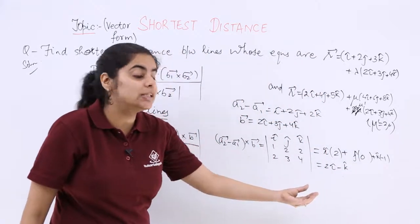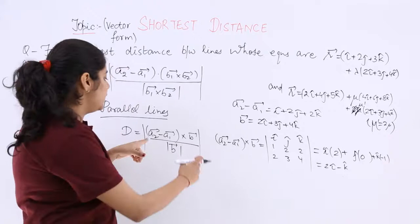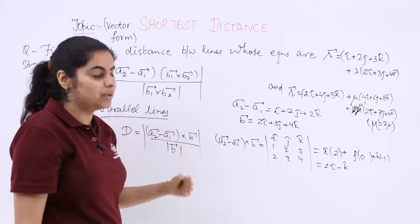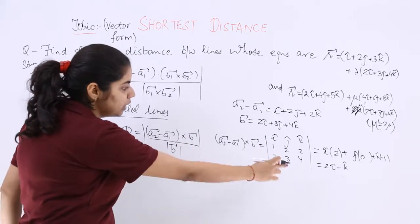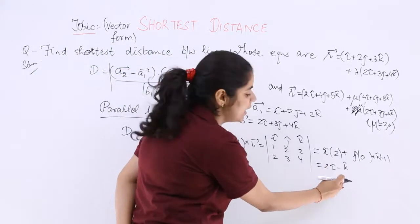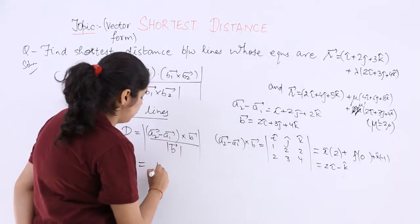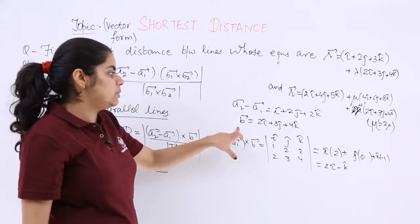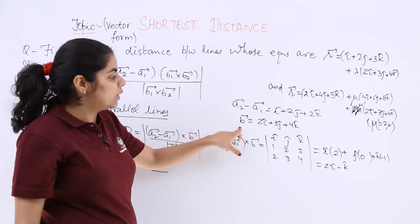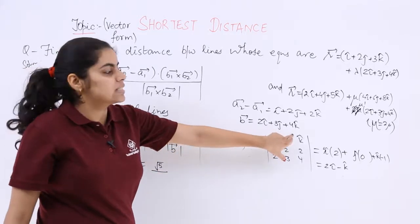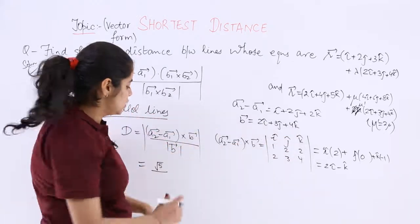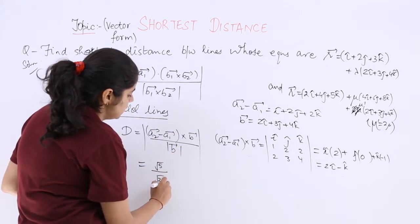Now this is the result of the cross product, but we have to place the magnitude and then write the answer in the numerator. So what is the magnitude? Root over of 2 square plus 1 square which is root 5. In the denominator mod of B. Find mod of B orally: squares, squares, squares. Means 4 plus 9 is 13, 13 plus 16 is 29. So root 29.